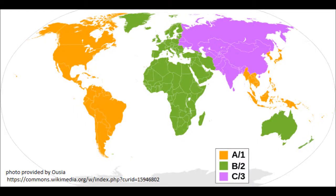Blu-ray uses a simpler region code scheme. Region A includes the Americas and their dependencies, East Asia, and Southeast Asia. Region B includes Africa, the Middle East, Europe, Australia, New Zealand, and their dependencies. Region C includes Central Asia, mainland China, Mongolia, South Asia, and Russia.